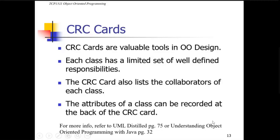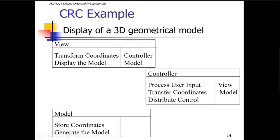CRC cards are used in object-oriented design and analysis. Classes should have a limited set of well-defined responsibilities, and the CRC card also lists collaborators. Attributes of a class can be recorded at the back of the CRC card. For example, in a geometric model with three classes — View, Controller, and Model — View has responsibilities like displaying the model, Controller has its own responsibilities, and Model stores coordinates and generates the model. Each lists the others as collaborators.